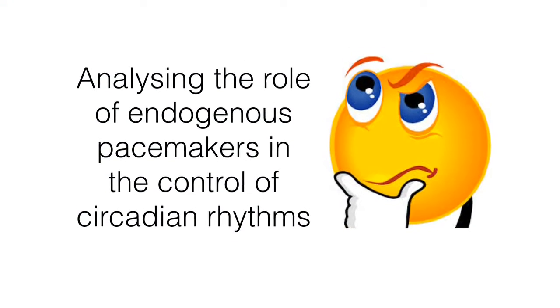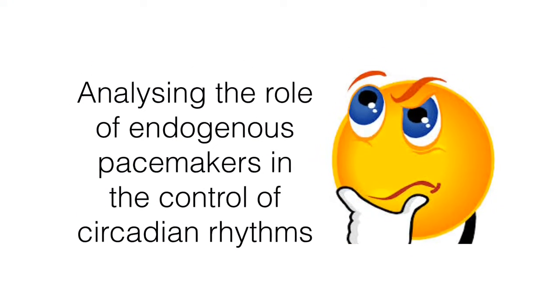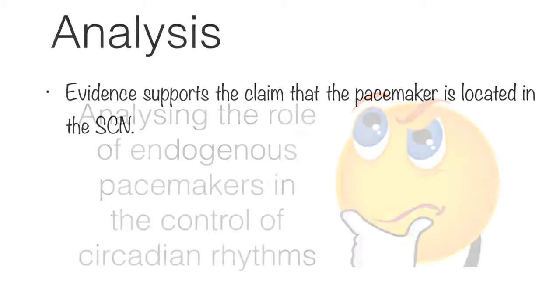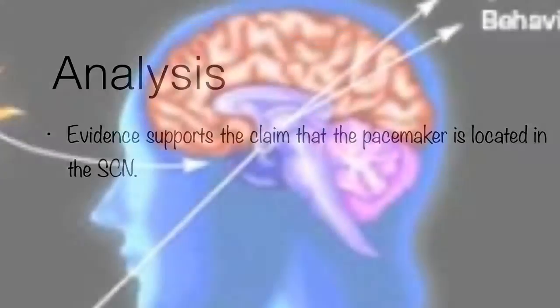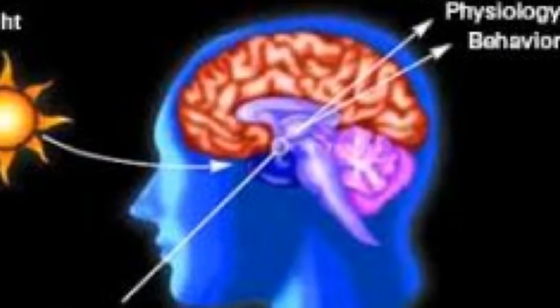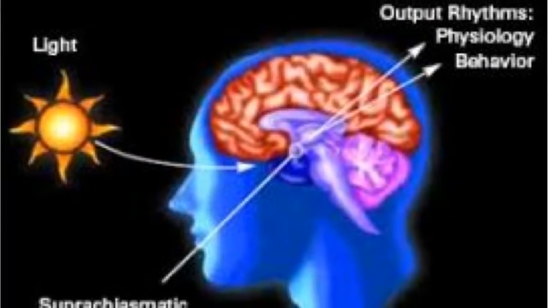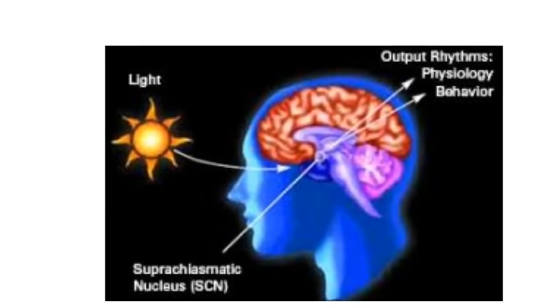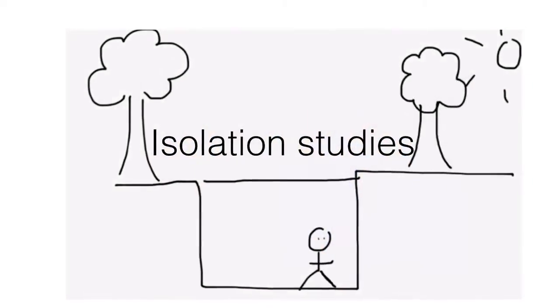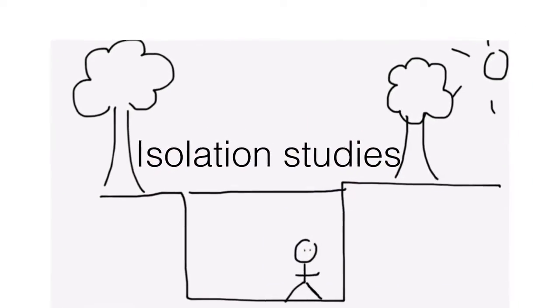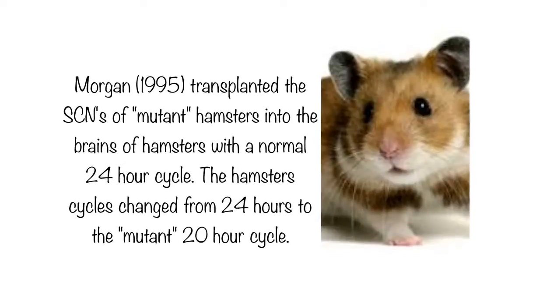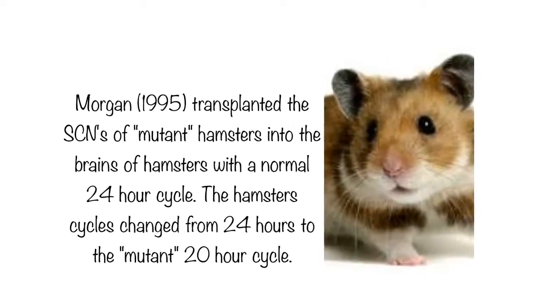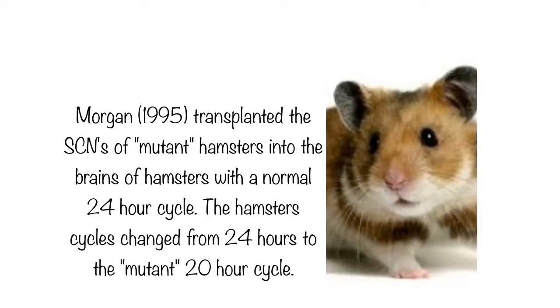There are many points to consider when analysing the role of endogenous pacemakers in the control of circadian rhythms. Evidence supports the claim that the SCN located in the hypothalamus is the endogenous pacemaker controlling our circadian rhythms. This evidence takes a scientific approach and therefore can be argued to be high on internal validity. For example, isolation studies have measured the effects of the removal of external cues, and studies have assessed the effects of lesioning the SCN, removing it or transplanting this structure. These studies provide strong objective evidence that the SCN is the location of the body clock.